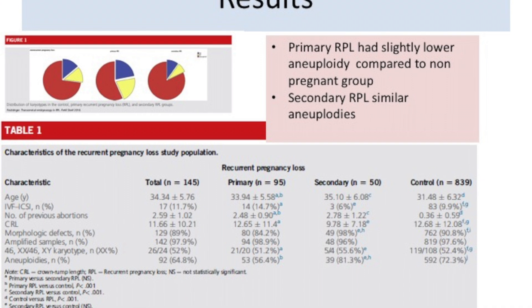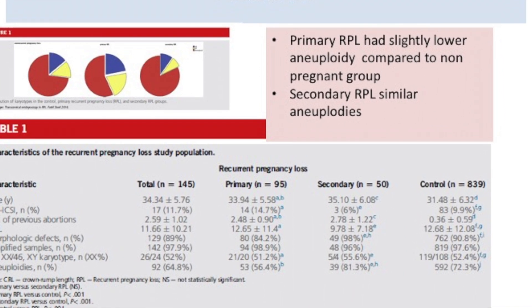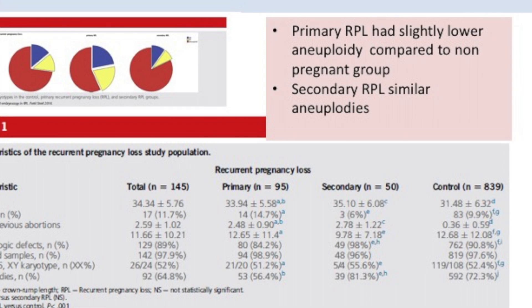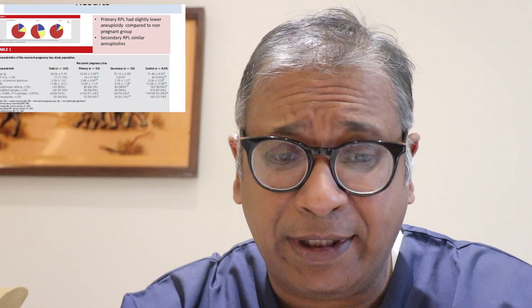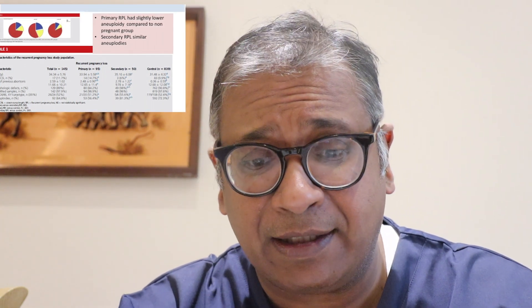Now when you look at the results, they're quite interesting. Primary recurrent pregnancy loss had a slightly lower rate of aneuploidy. Secondary recurrent pregnancy loss had a similar amount of abnormality. So when you looked at aneuploidies in primary recurrent pregnancy loss it was about 56.4%, in secondary recurrent pregnancy loss aneuploidies were 81.3%, and in the controls it was 72.3%.